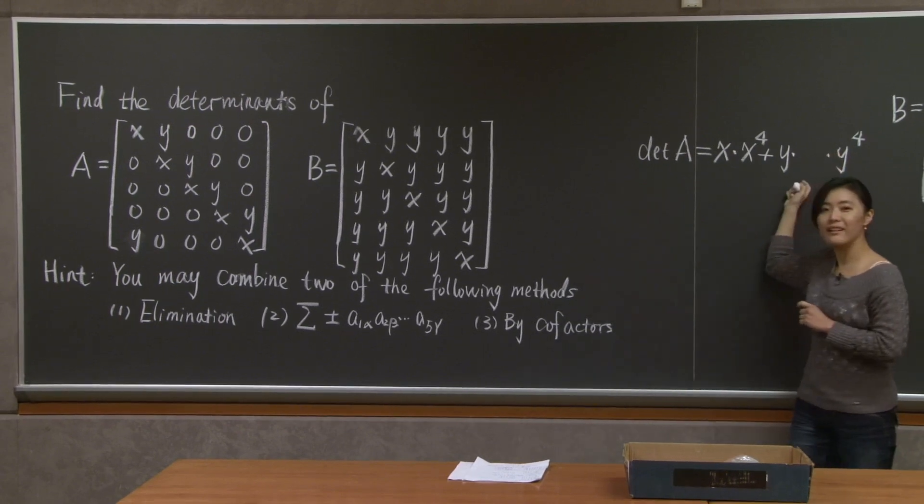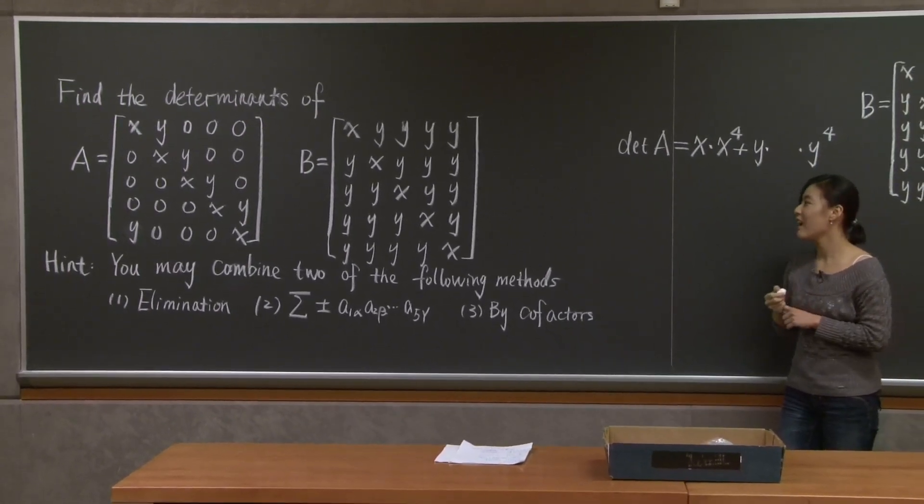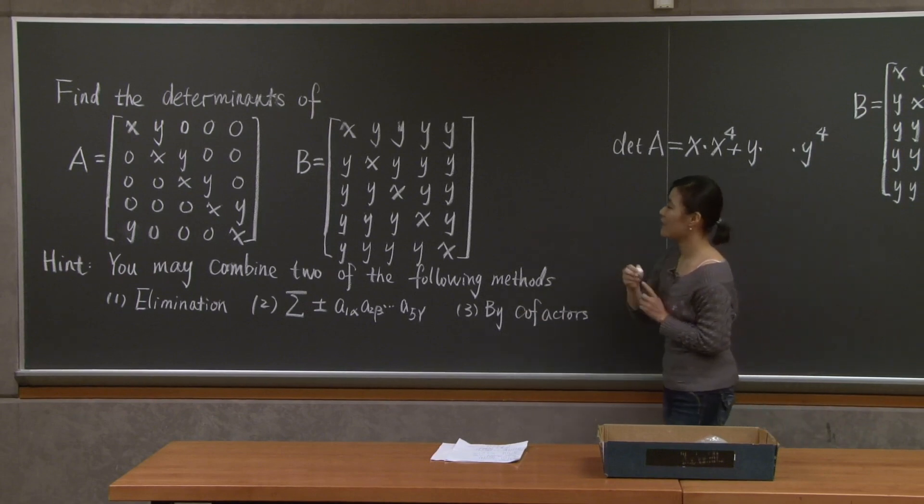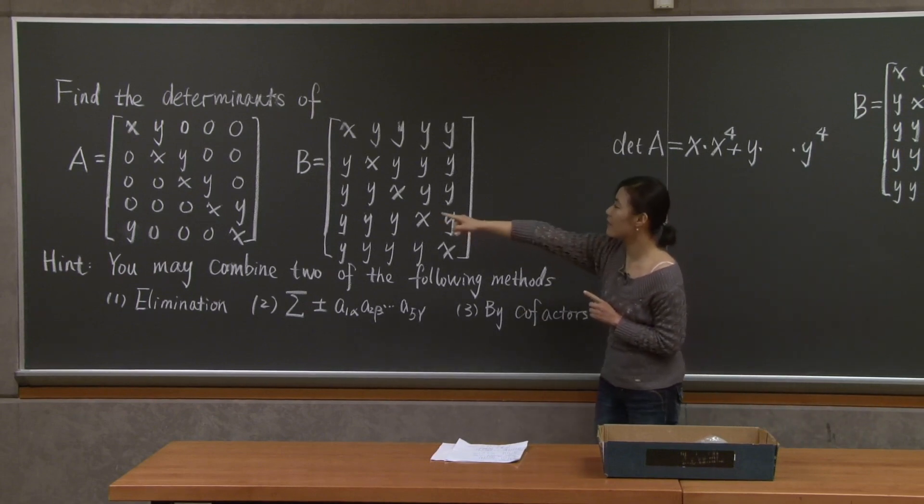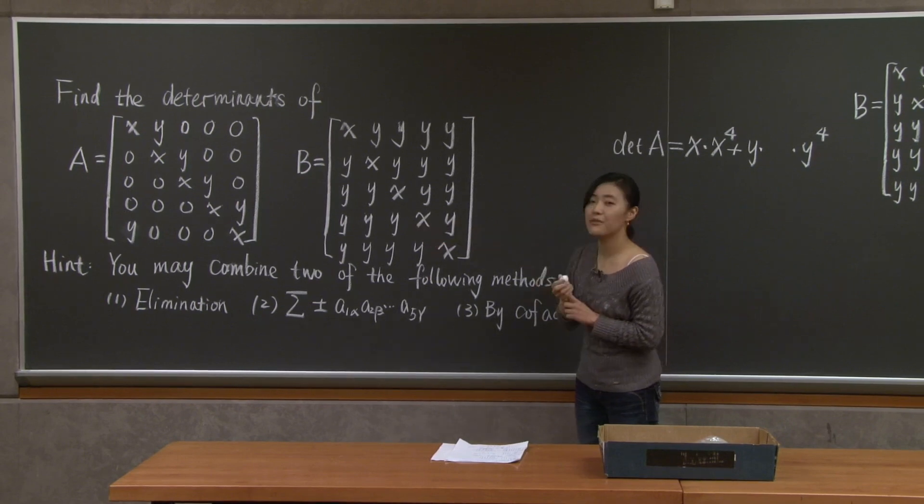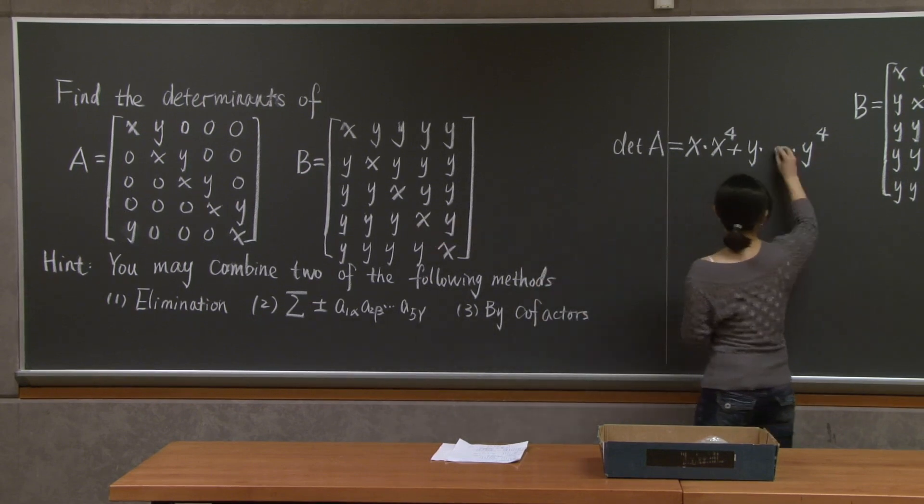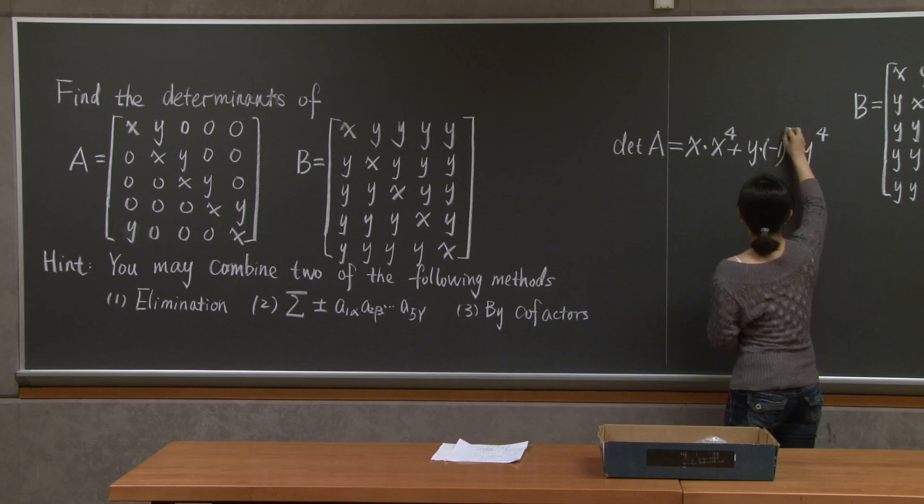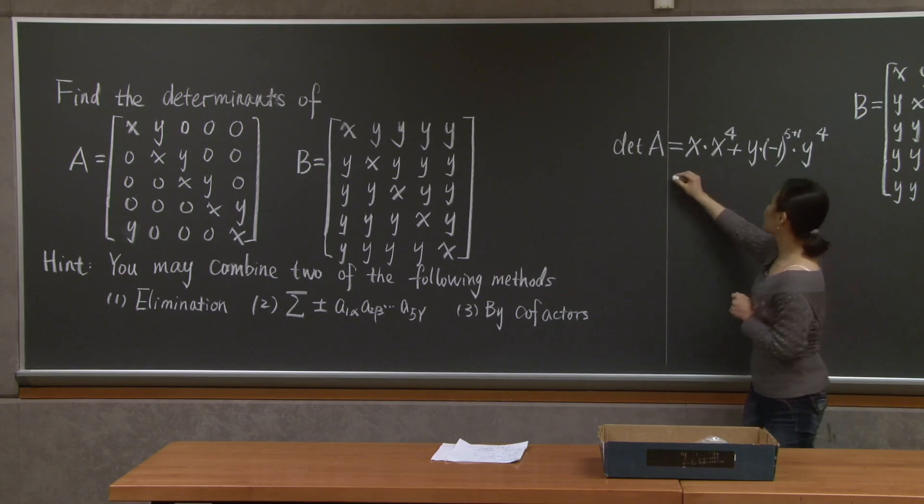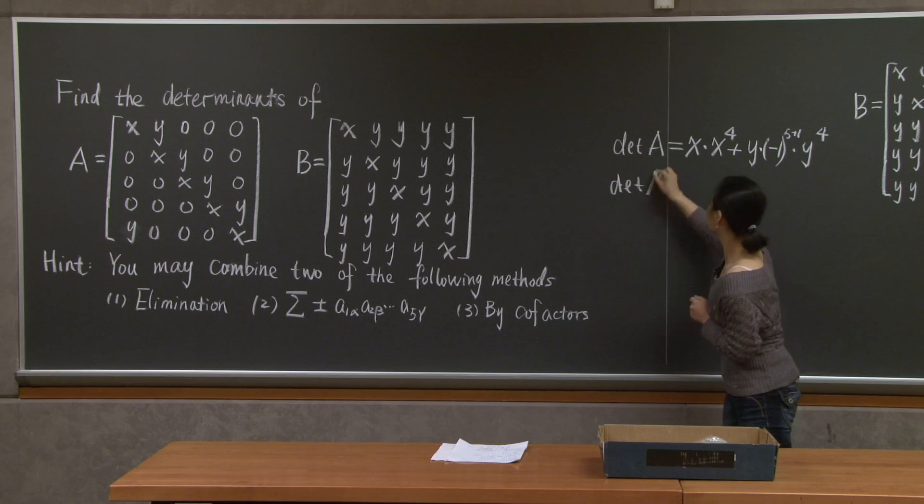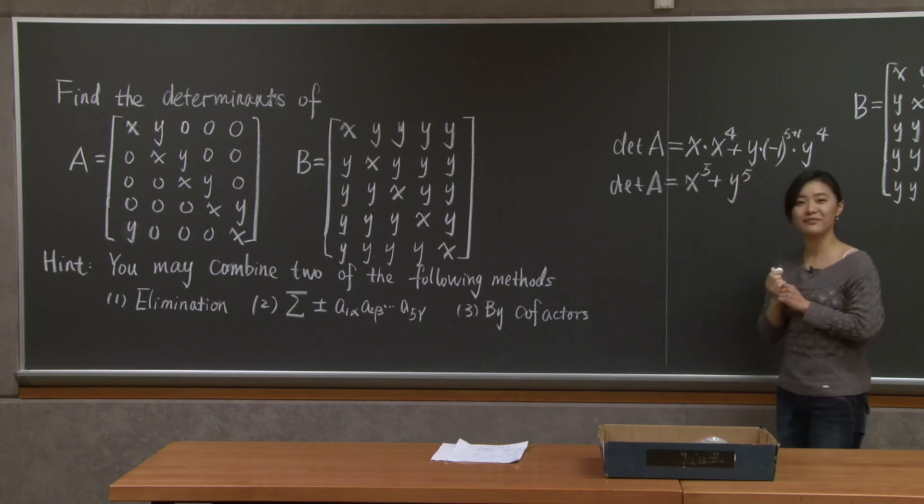In principle, there should be another factor here indicating the sign. And the sign in this case, well because y is the entry in the fifth row in the first column, this factor should be negative 1 to the power of 5 plus 1, and of course it's just 1. So the determinant of A is simply equal to x to the fifth power plus y to the fifth power. Did you get the correct answer?